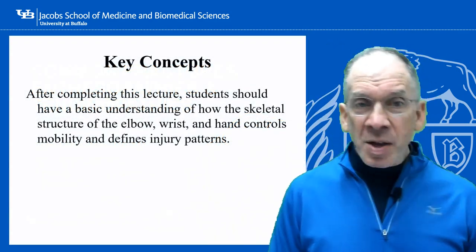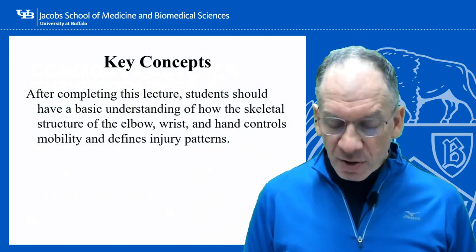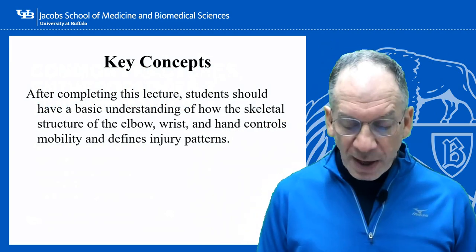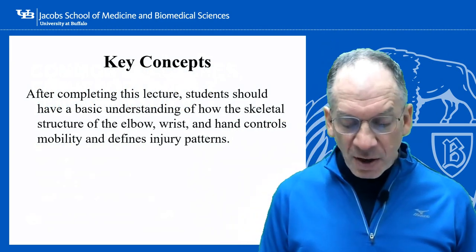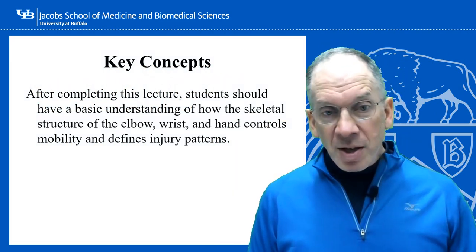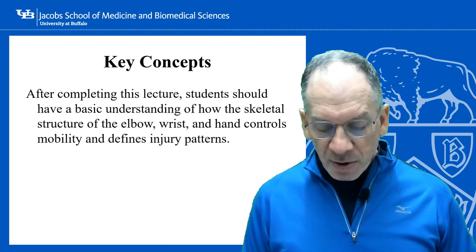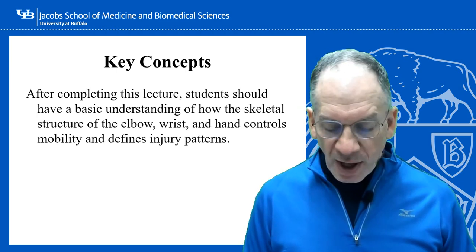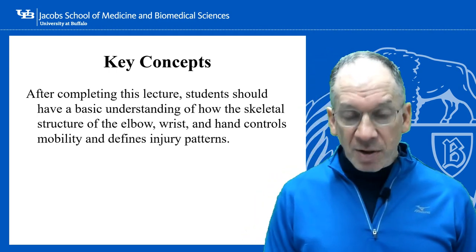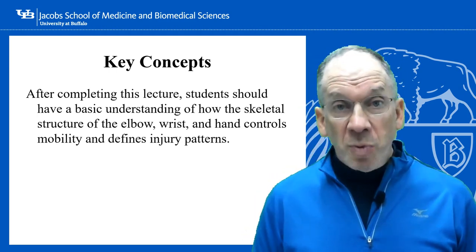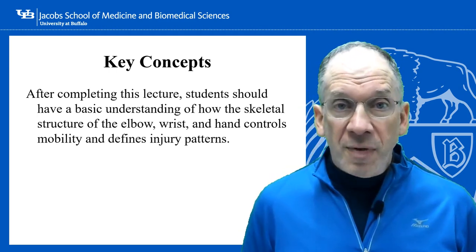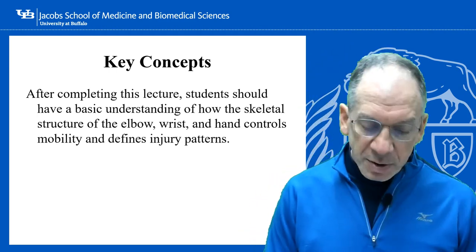Key concepts. After completing this lecture you should have a basic understanding of how the skeletal structure of the upper extremity, particularly the elbow, wrist, and hand, controls mobility and defines injury patterns.